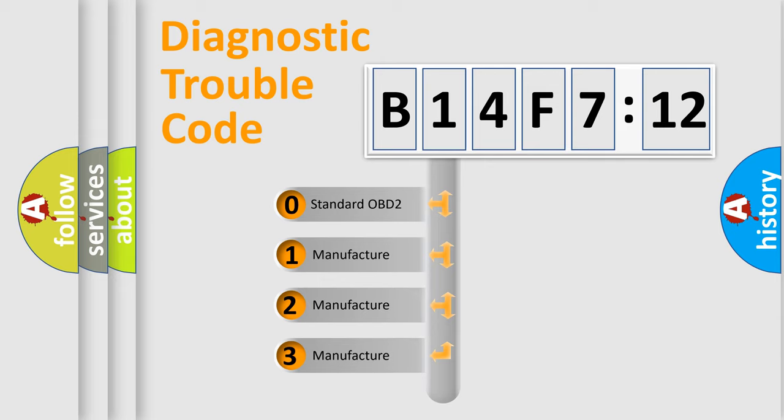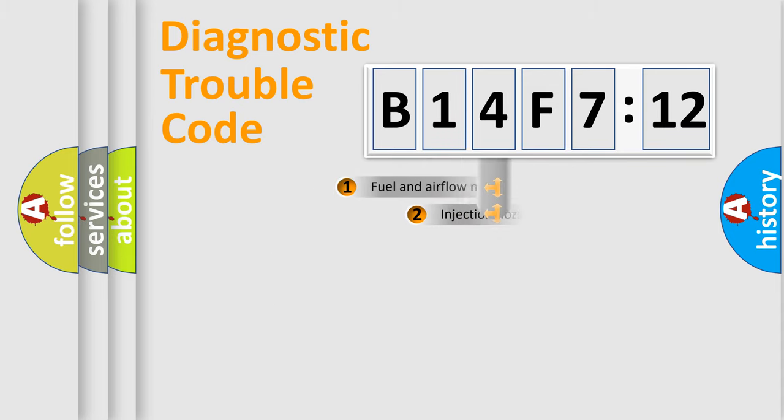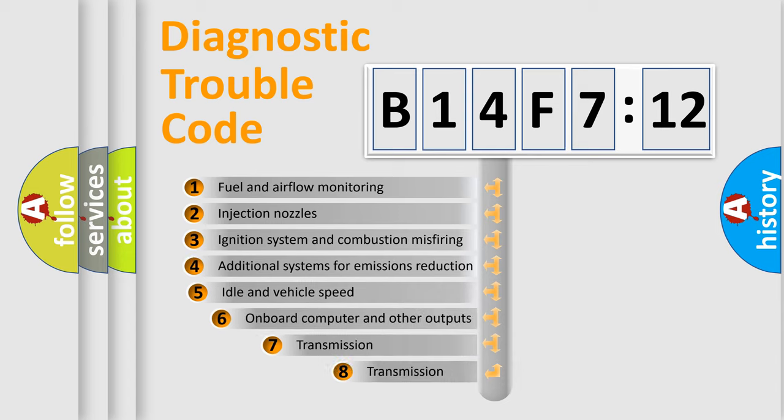If the second character is expressed as zero, it is a standardized error. In the case of numbers 1, 2, or 3, it is a more precise expression of the car-specific error.